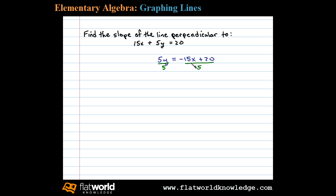Remember 5 is a common denominator so we need to divide both of these terms by 5 and that leaves us with slope-intercept form y equals negative 3x plus 4.